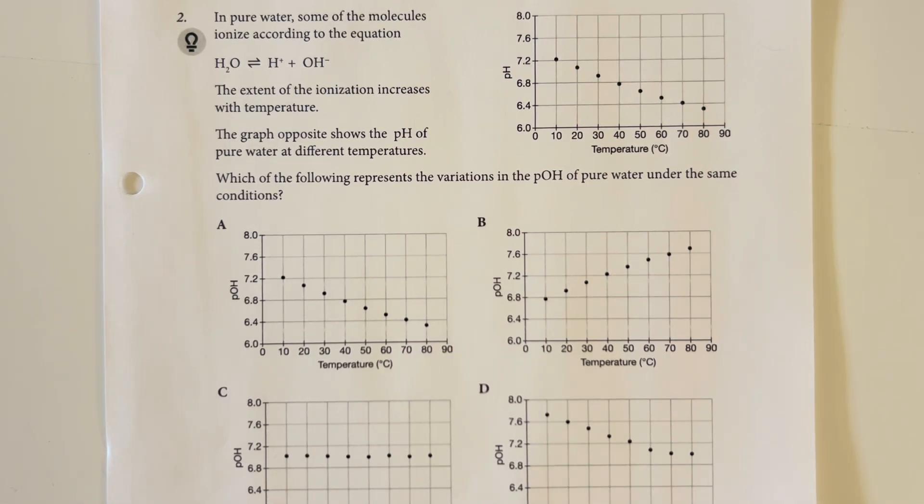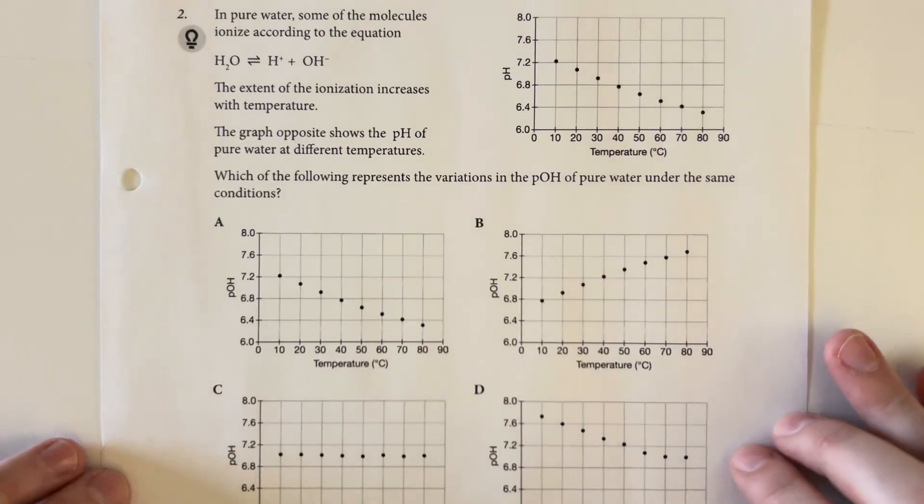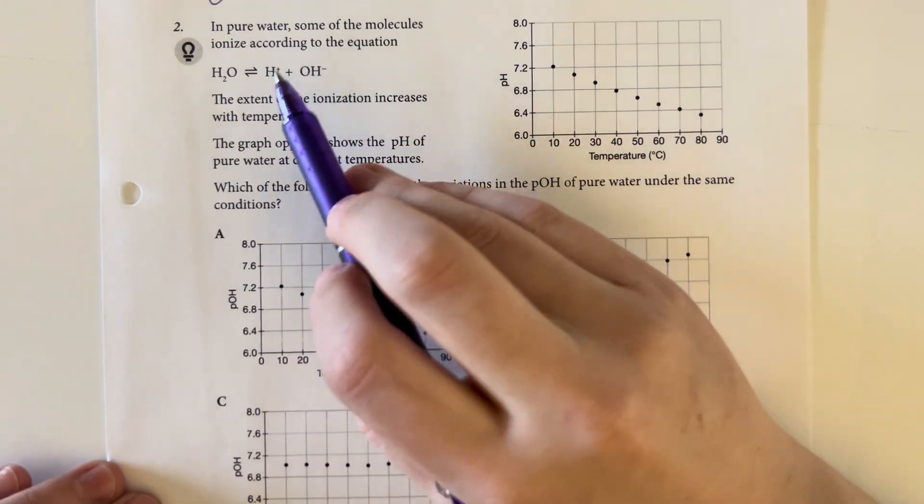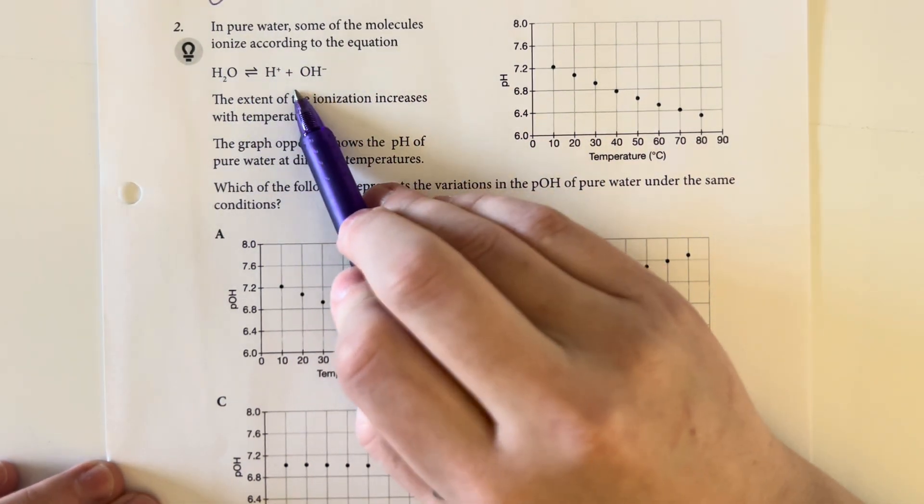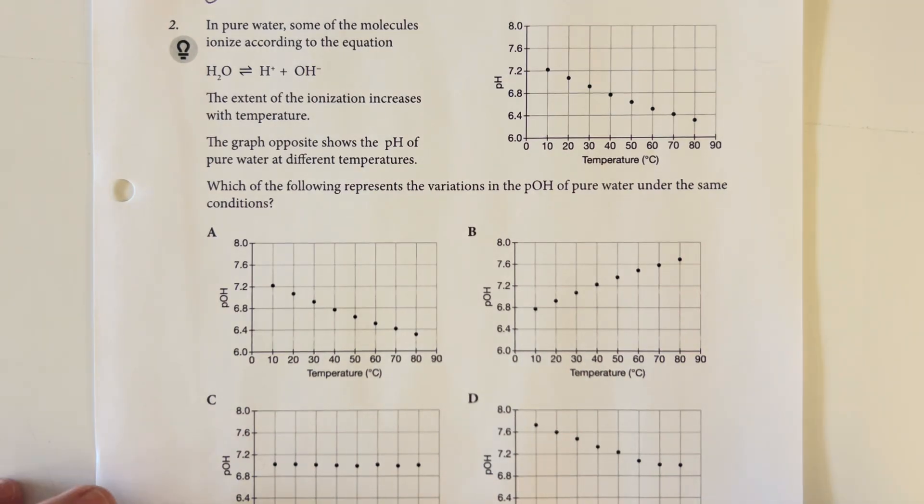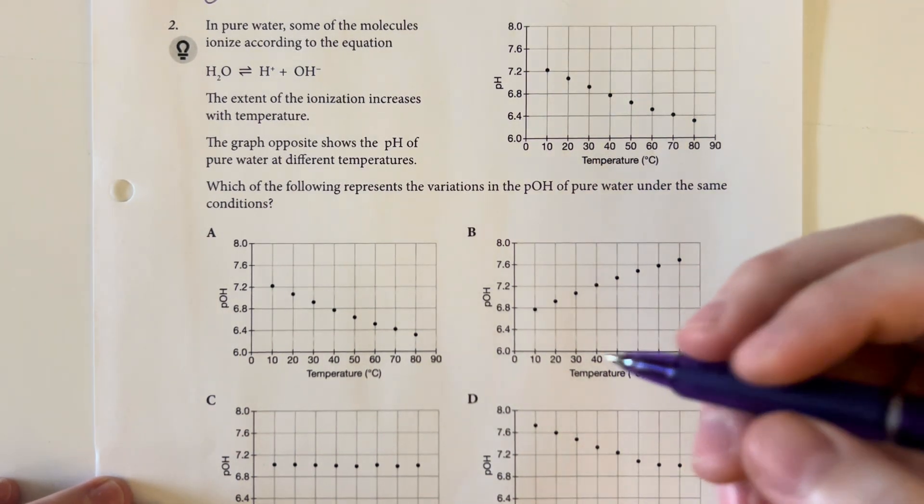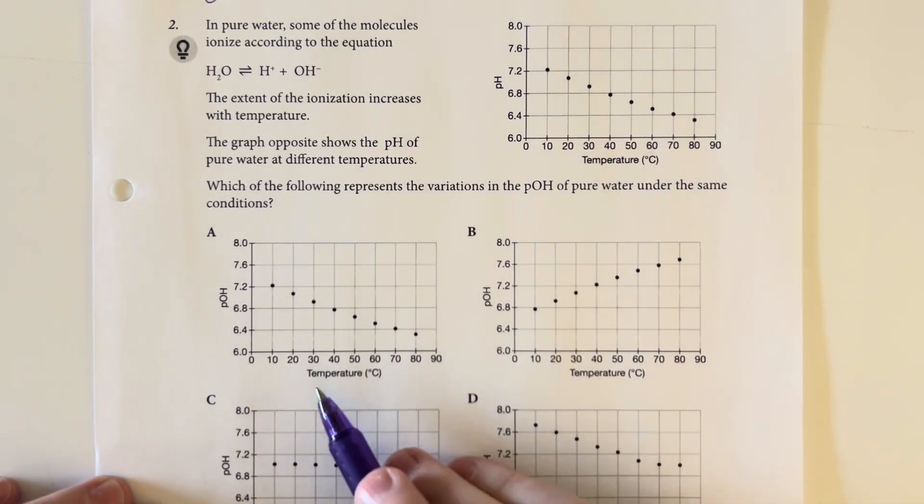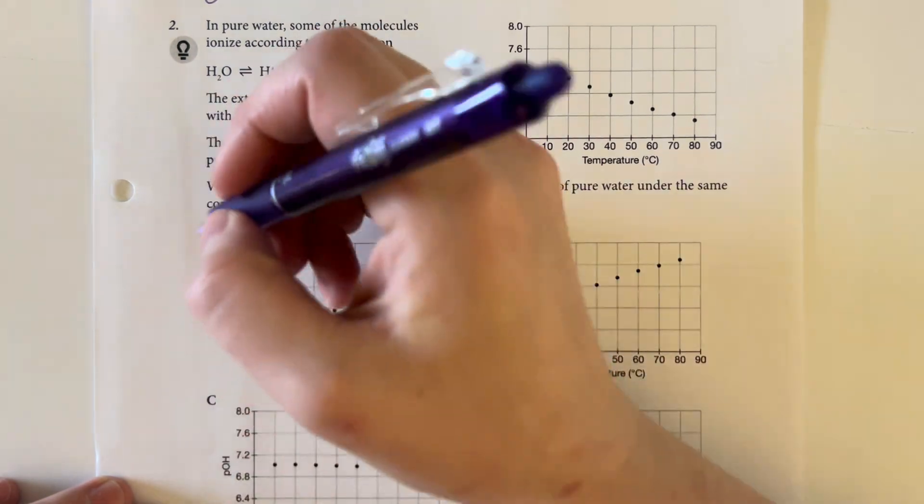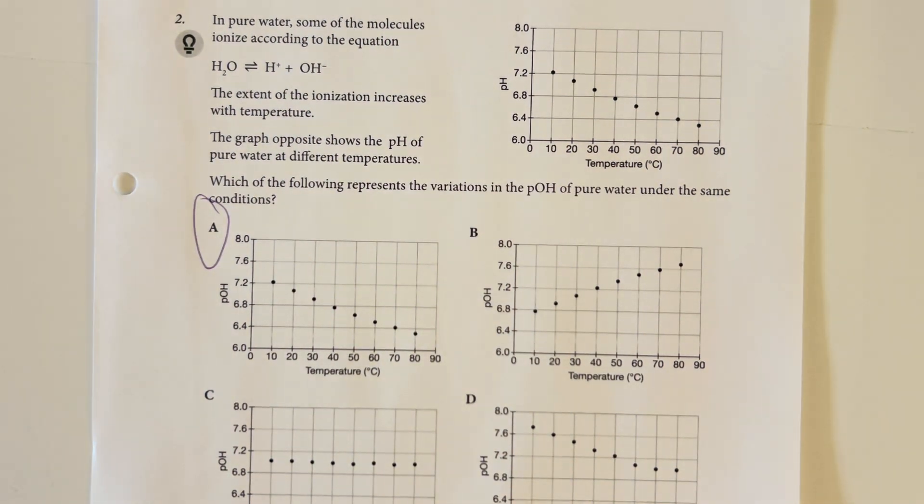So as we just established in the equation directly above, since our dissociation produces the same number of hydrogens as hydroxides, my pH and pOH are going to be equal to each other, and so we're going to just find the graph that matches exactly, and that would be answer choice A.